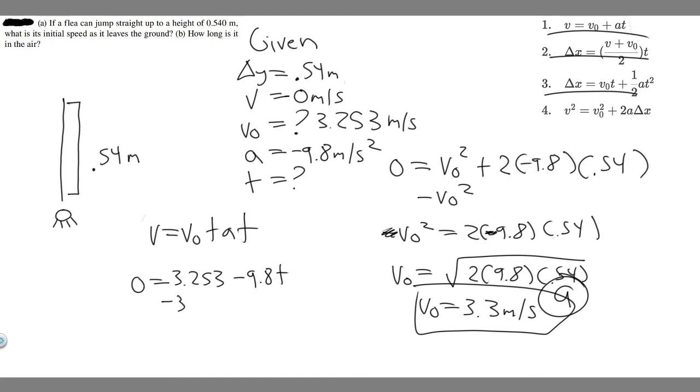Solving for T, we can move this to the other side. So minus 3.253 equals minus 9.8T. And if we want T by itself, divide both sides by -9.8. So if you go ahead and do this, -3.253 divided by -9.8, it's going to become positive because the negatives cancel.